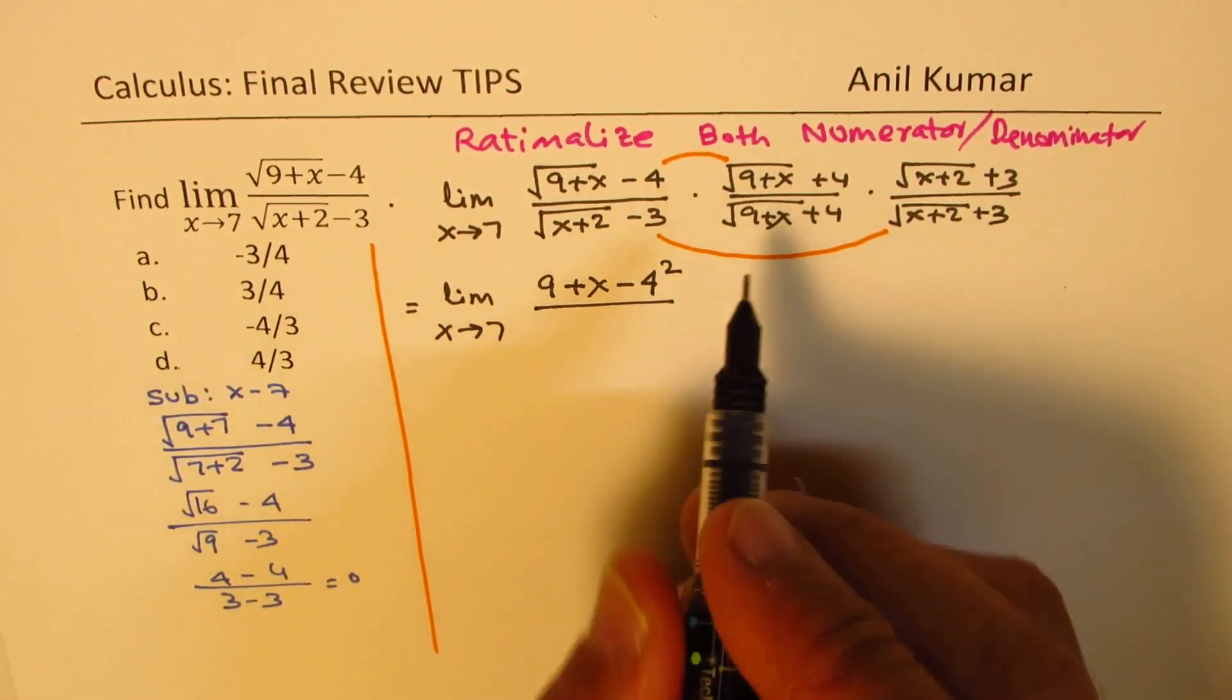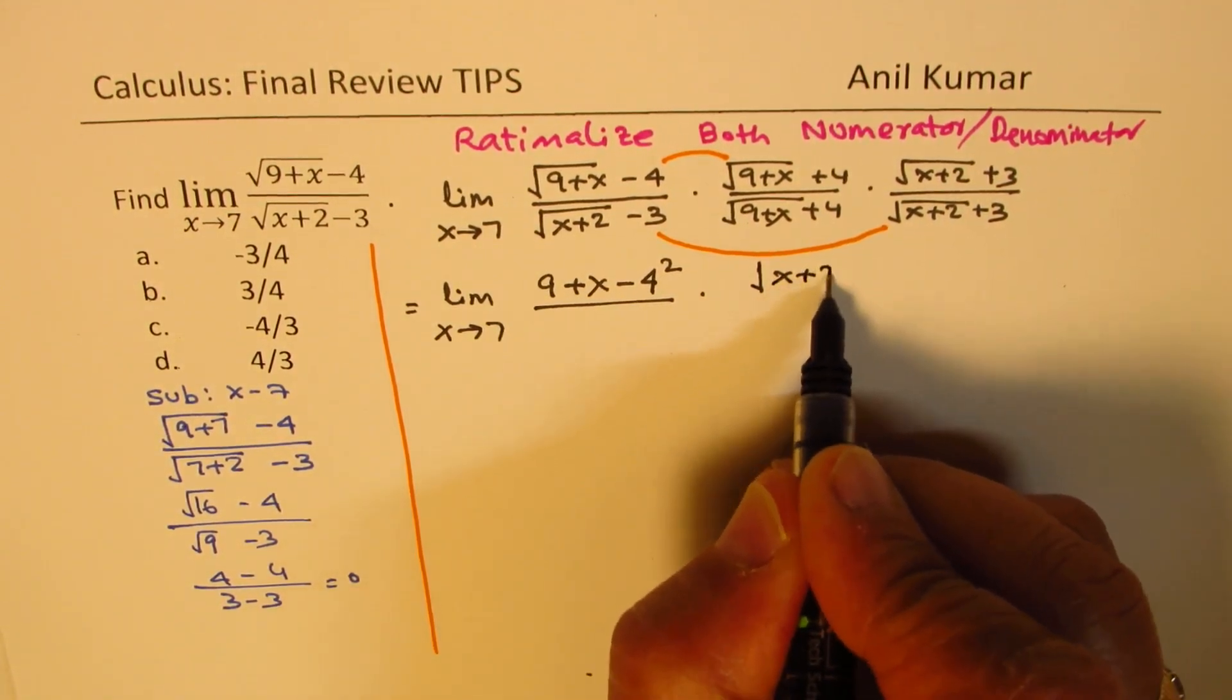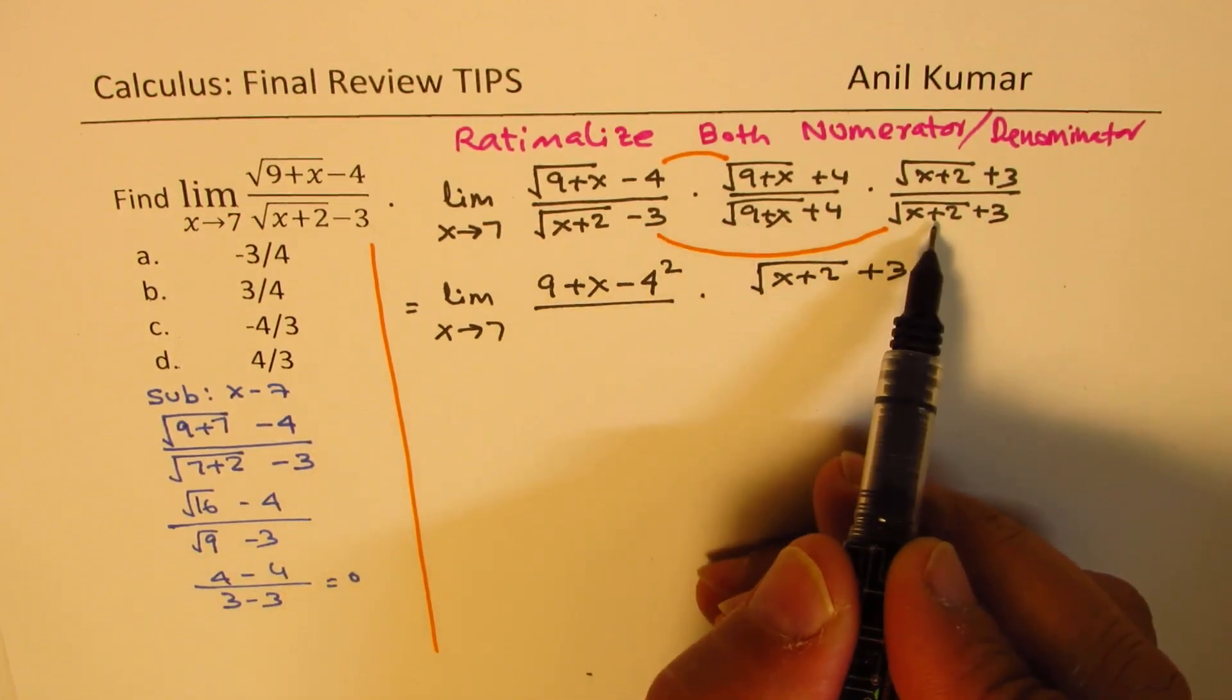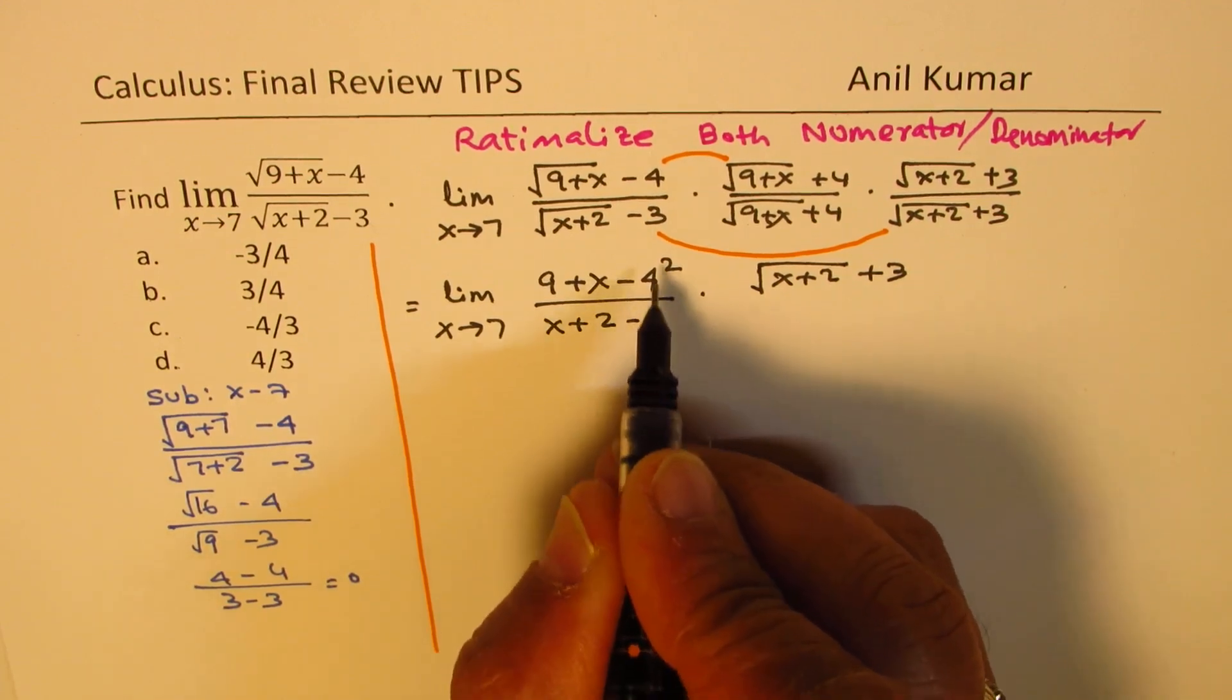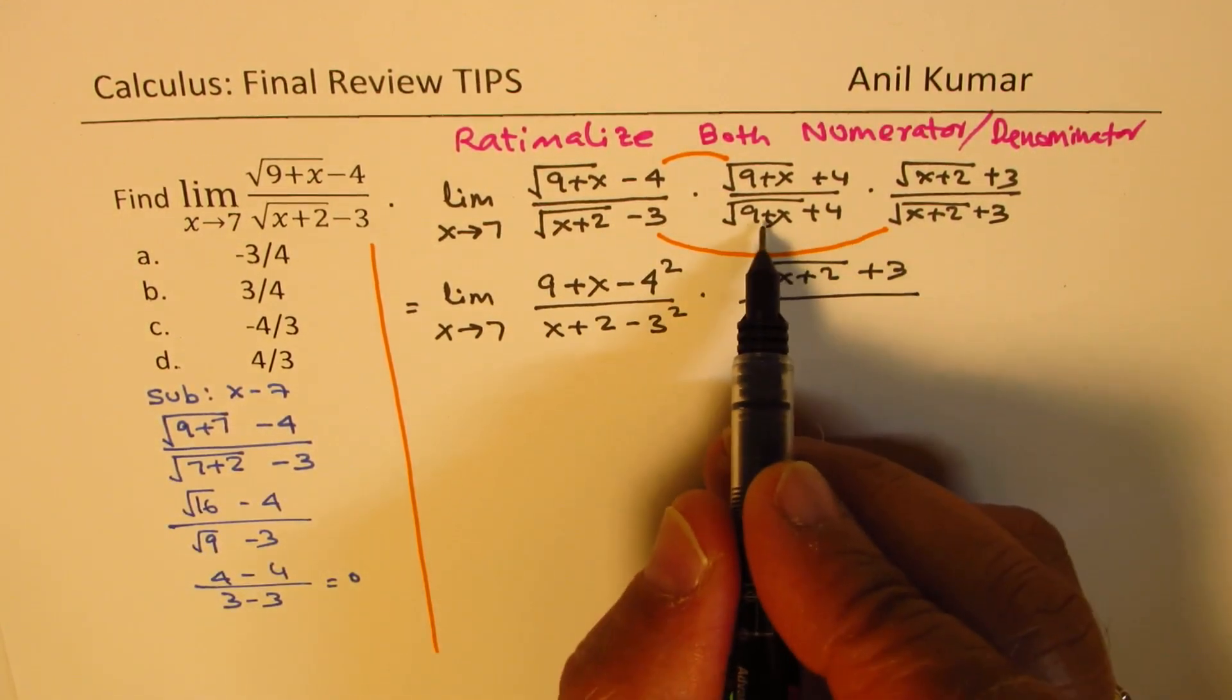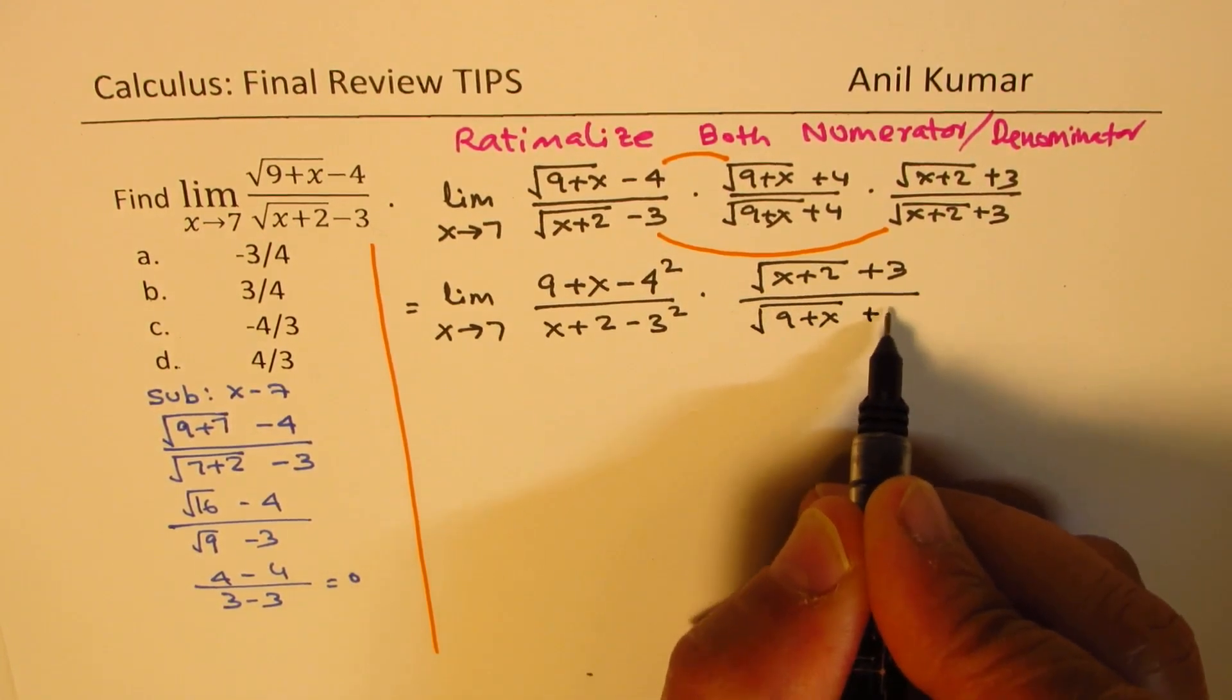Divided by, when we multiply these two, this term is left. Let's write it down: square root of x plus 2 plus 3. In the denominator, we are multiplying these two to get difference of square, which is x plus 2 minus 3 square. And the term square root of 9 plus x plus 4.